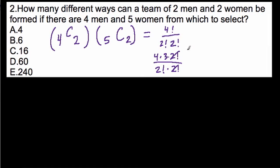Times 5C2, or 5 factorial over 3 factorial times 2 factorial. The 3 factorials cancel out.